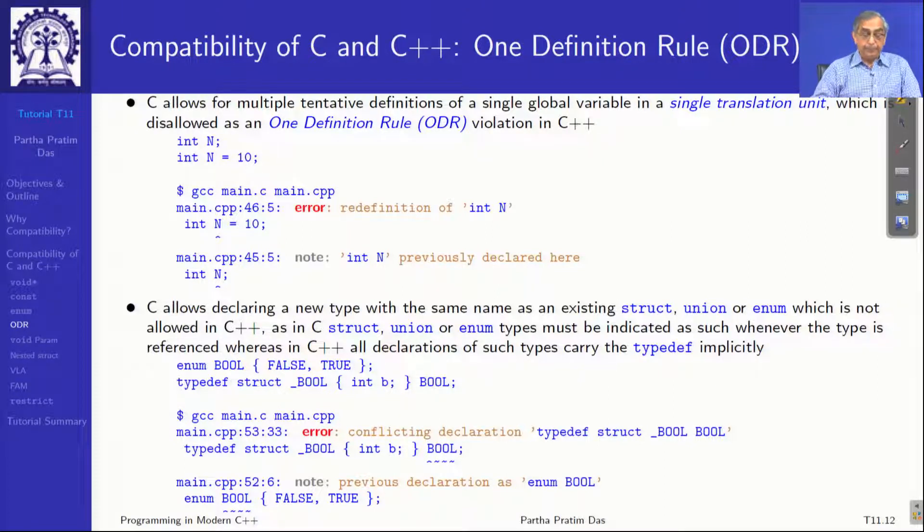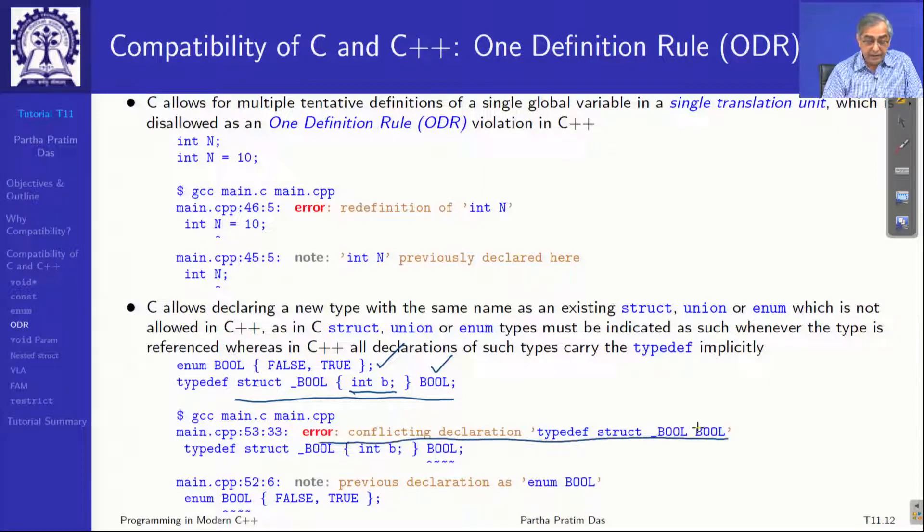One definition rule excludes the redefinition of a new type by the same name. For example, in C, you can define an enum bool with false and true, and you can make a structure _bool having a data member b and give it a typedef to bool. In C this is permitted, but you are actually reusing the name. In C++, this will not be permitted. In C++, it will say conflicting declaration here. Previous declaration was enum here.